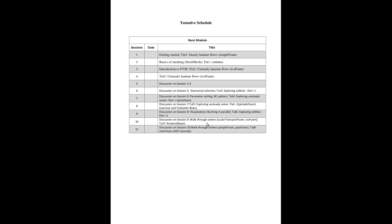We then discuss certain solvers and how the code is developed for particular solvers, going into the Doxygen area to understand how to explore it. This is covered in sessions 9 and 10. Along with that, we look at function objects, which are a very powerful concept in OpenFOAM. With function objects you can do post-processing and co-processing — for example, calculating Cd and Cl values while the simulation is running, or generating sectional contour plots, streamline plots, and more.